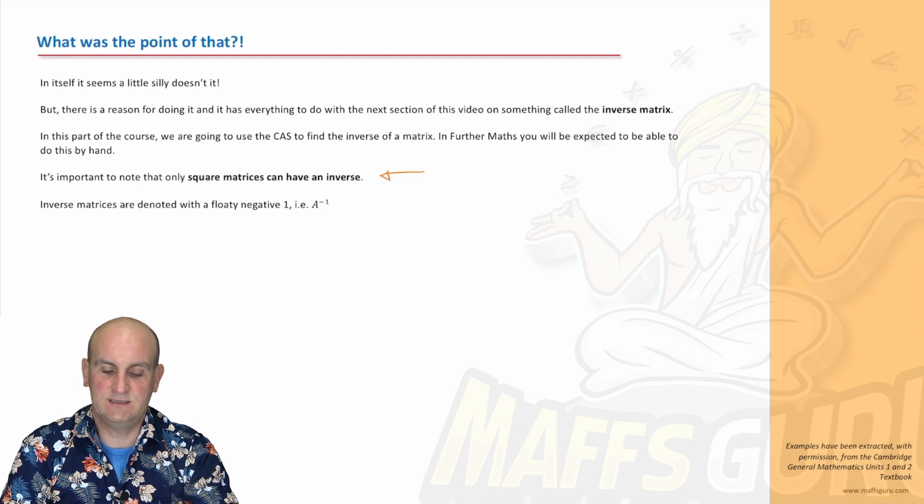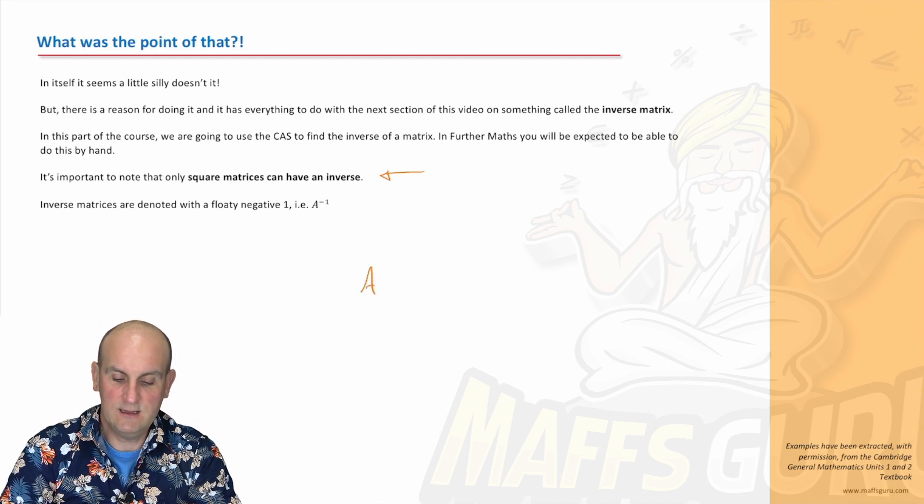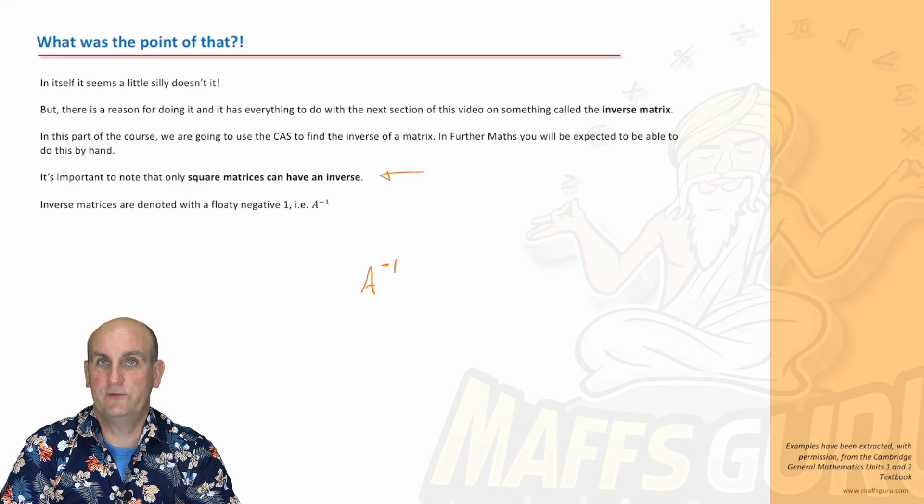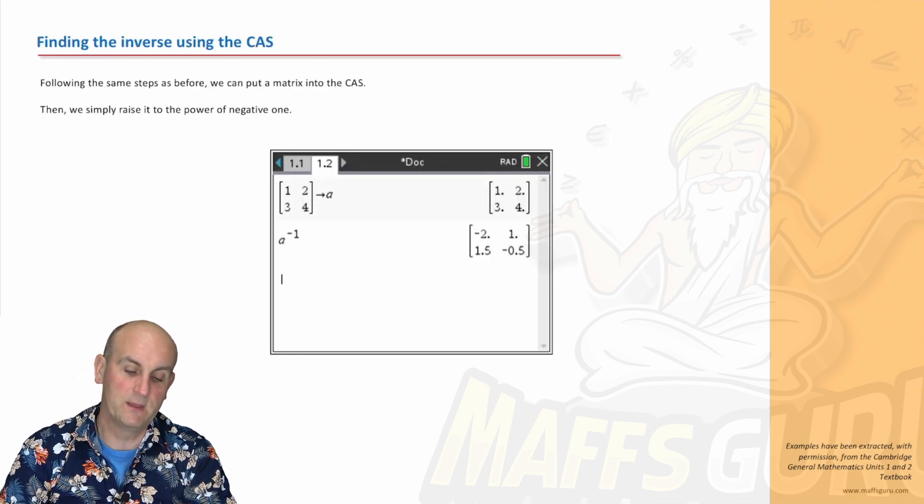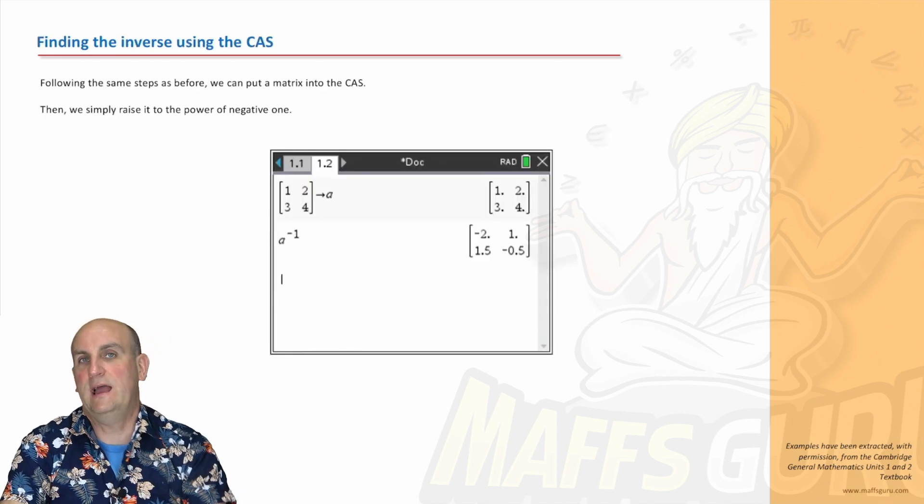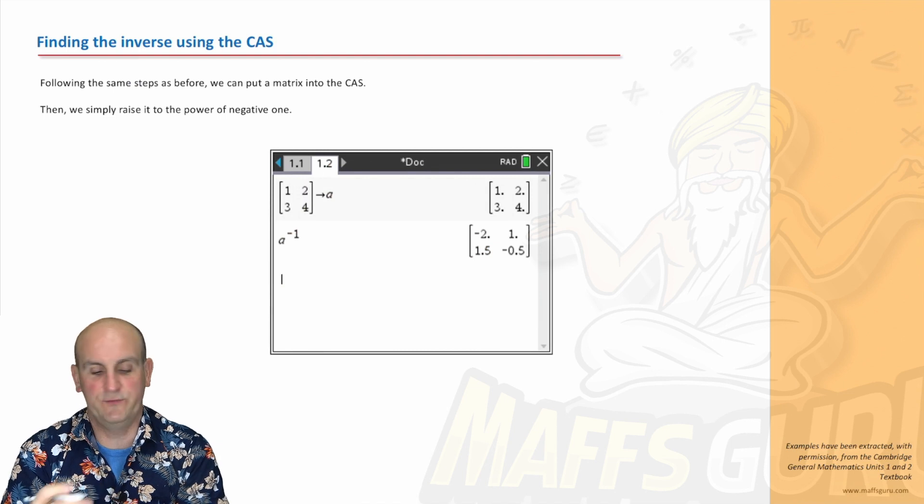And an inverse matrix is denoted by, generally, the capital letter with a minus floaty one. All right, so a power of minus one. And you're going to turn around and say, well, okay, you still haven't told me what it is. Nope, because I'm going to show you in the next lesson. But let's just look at how to find this inverse, this magical inverse on the CAS.